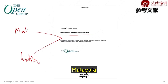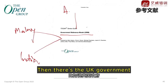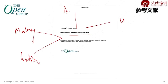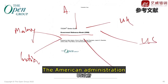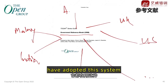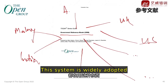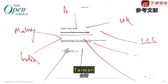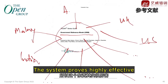You'll see Malaysia, the Australian government, the UK government, the US government — numerous governments have adopted this system, including Uganda and Bhutan. Taiwan's government has also implemented it. The system proves highly effective and is widely adopted.